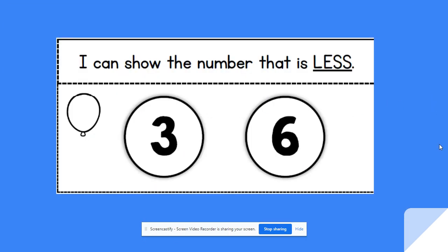So let's look at these two numbers. Which number is less? Three or six? Three is less than six. It's smaller than six.